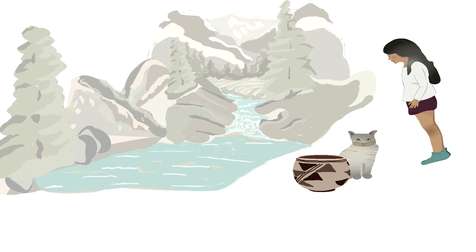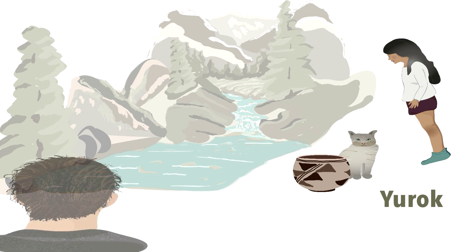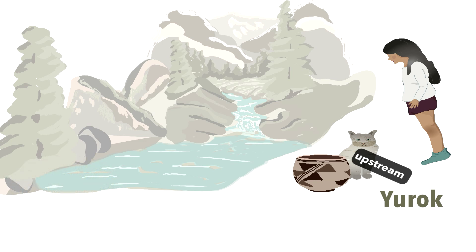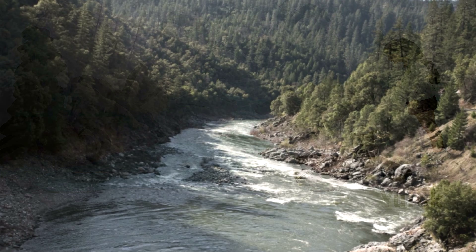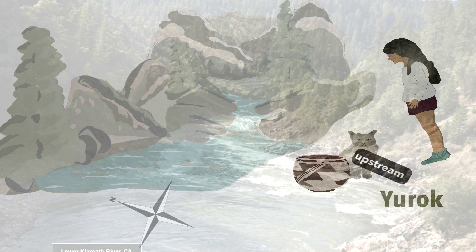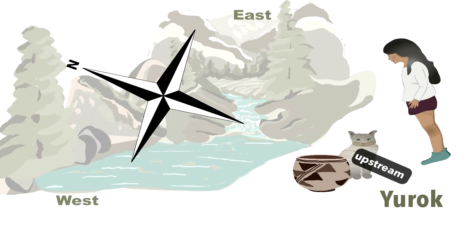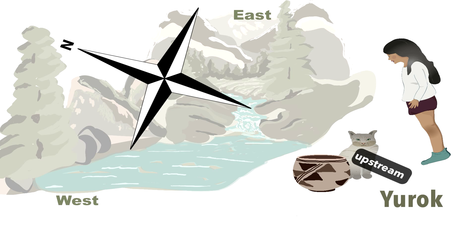The situation is quite different for speakers of Yurok. If they put themselves in the shoes of the girl in this scenario and someone asks where is the cat, they'll say what in English would translate literally as: the cat is upstream from the clay pot. The culture of the Yurok people is one in which life revolves around the Klamath River, and its location and flow relative to other locations in the landscape are highly salient in their everyday lives. Since the cat is positioned to the east of the clay pot, the Yurok speaker conceives of it as being upstream from the clay pot.